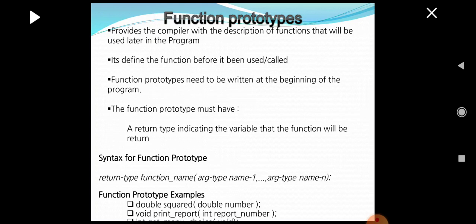Function prototype. A function prototype provides the compiler with a description of the function that will be used later in the program. It defines the function before it is used. Function prototypes need to be written at the beginning of the program and must also have a return type indicating the type of value which it will return. The syntax for a function prototype is: return type, function name, and list of arguments inside parentheses.